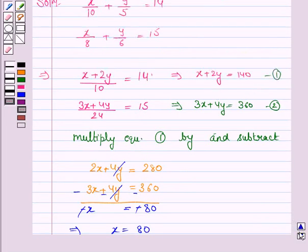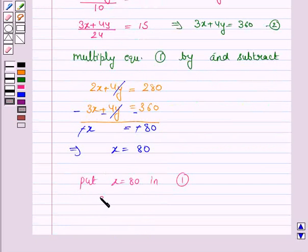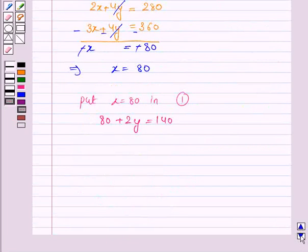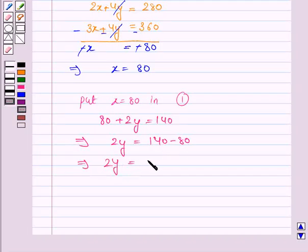So 80 plus 2y is equal to 140. This implies 2y is equal to 140 minus 80, that is 60. So this implies y is equal to 60 by 2, that is y is 30.